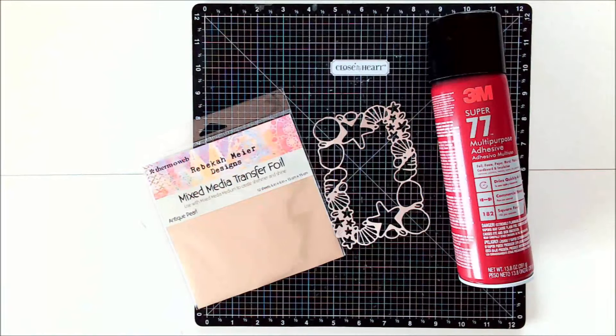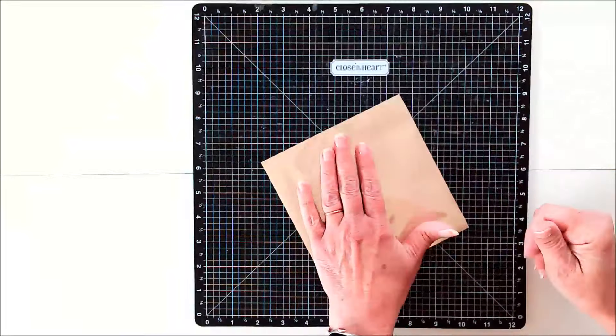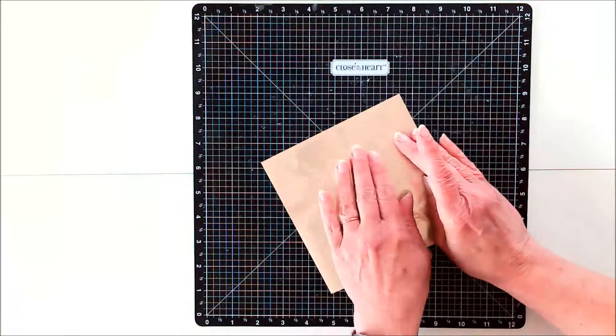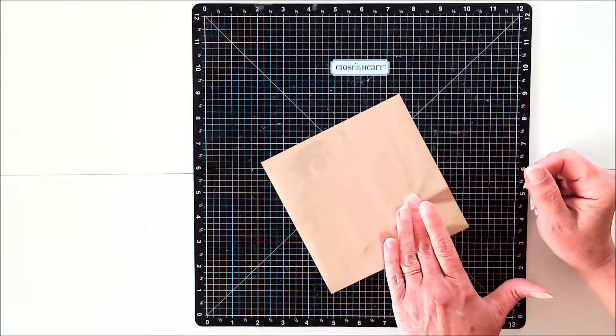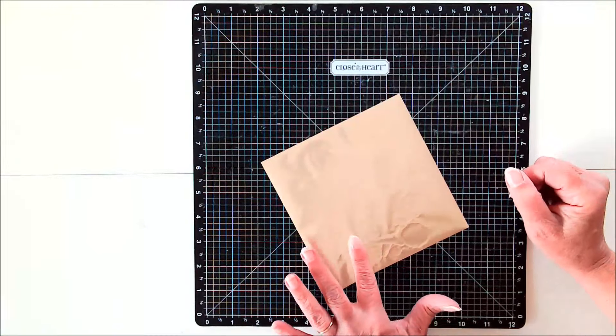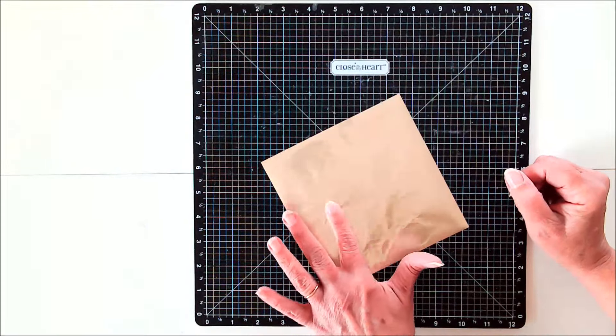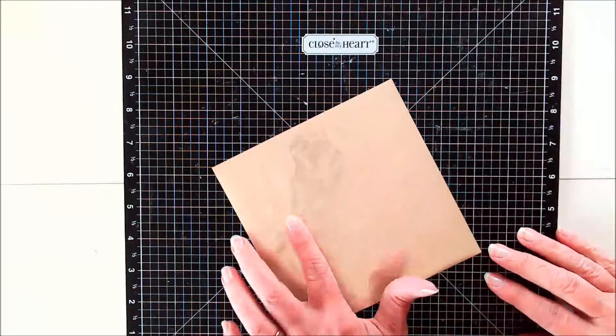But the first thing that I'm going to do is add some foil without using a machine, and I'll be doing that by spraying the border piece with spray adhesive and then laying the transfer foil on top of that and burnishing it down really good. I like to use my fingers and rub all over it really well to make sure that the foil and the die cut make complete contact before I carefully peel off the foil sheet.